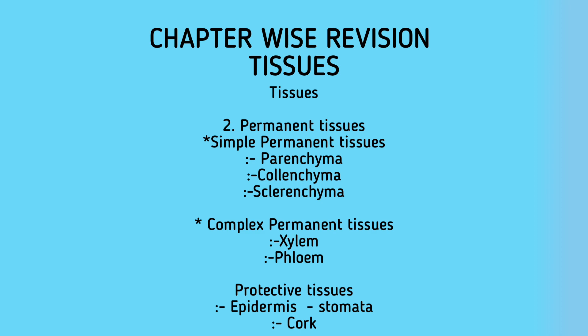Collenchymatous cells are also living cells but possess irregular thickenings, so there is little intercellular space, and they help in easy bending of plants. The third type is sclerenchymatous cells — dead cells, long and narrow, with the presence of lignin. They are present on hard coverings of seeds, around vascular bundles, and in leaf veins. Their function is to provide strength, hardness, and stiffness to the plant.